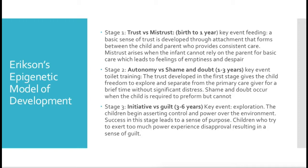Stage three is Initiative versus Guilt, from three to six years of age. The key event is exploration. Children begin asserting themselves and exerting control and power over their environment. Success in this stage leads to a sense of purpose. However, children who try to exert too much power can experience disapproval, and that disapproval can result in a sense of guilt.